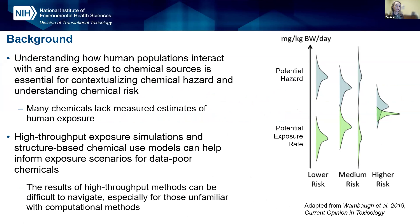I'm going to switch gears and focus much more on the computational side of cellular and computational toxicology. The driving force behind my presentation at the ASCCT conference was that understanding how human populations interact with and are exposed to chemical sources is essential for contextualizing chemical hazards and understanding chemical risks. It's not just hazard alone or exposure alone that will help you prioritize what chemicals you investigate further when looking at risk, but the intersection of both. A chemical that is very hazardous but has low exposure may be low risk, and likewise a chemical with high exposure and low hazard is also low risk. It is when you have a chemical that is both high hazard and high exposure where you might want to investigate further.